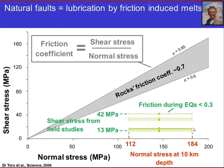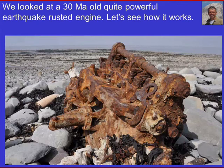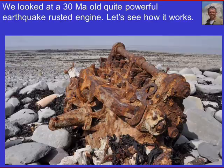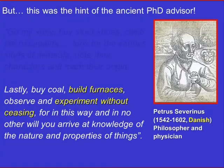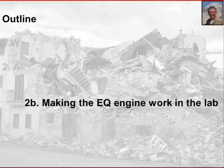So this is what we get from the field — looking at an earthquake engine that is 30 million years old, capable perhaps of producing magnitude 6 to 7 earthquakes. Now we move to the lab to understand how it works. What are the performances of this earthquake engine? Let's build furnaces and experiment, as that Danish scientist was suggesting.